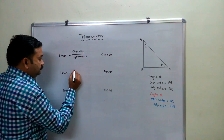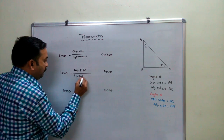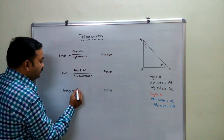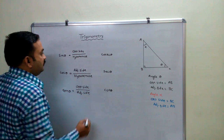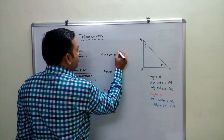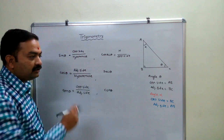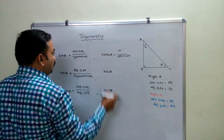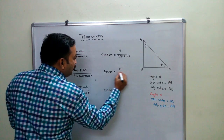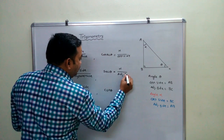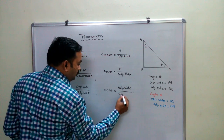Cos theta is adjacent side upon hypotenuse. The reciprocal of sin theta gives cosec theta, which is hypotenuse upon opposite side. Sec theta is hypotenuse upon adjacent side, and cot theta is adjacent side upon opposite side.